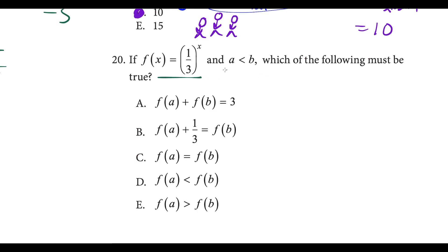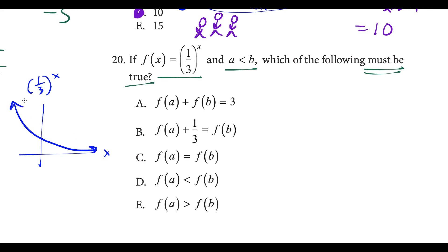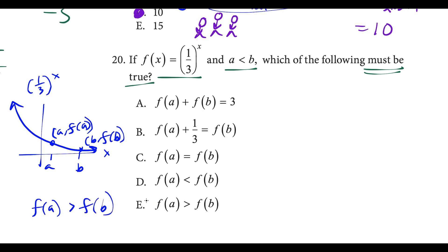Question twenty: f of x equals one third to the x power, and a is less than b — which of the following must be true? Drawing the graph of (1/3)^x, this is a decreasing exponential function because the base is a fraction between 0 and 1. As x increases, we multiply one third by itself more and more, shrinking the output. So if a is less than b, the point at a is higher on the graph than at b, meaning f of a is greater than f of b. This matches choice E — because our function is decreasing, picking values further right gives smaller function values.